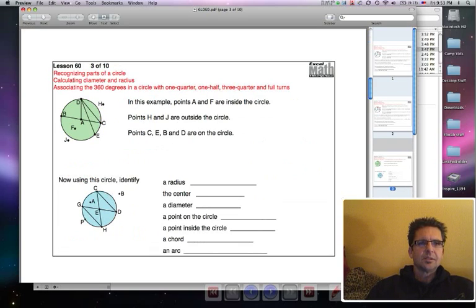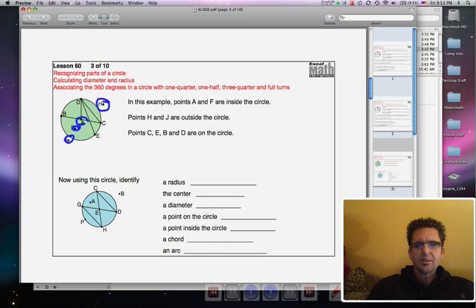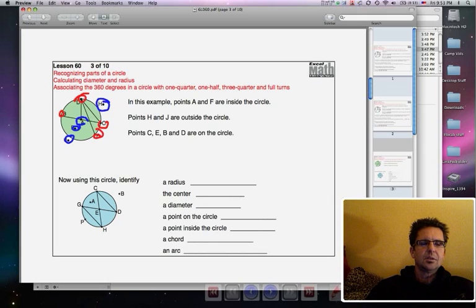In this example, points A and F are inside the circle. Let me mark those. A and F are inside the circle. Points H and J are outside the circle. Here's J, here's H. And C, E, B, and D are on the circle. C, here's C, E, B, and D. Those are actually on the circle.